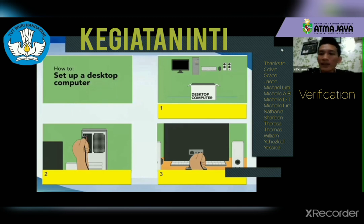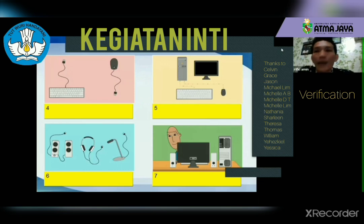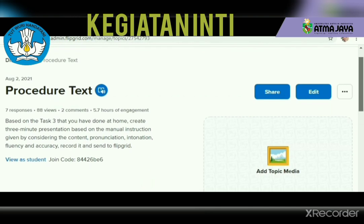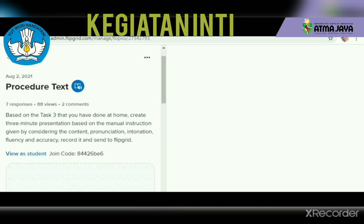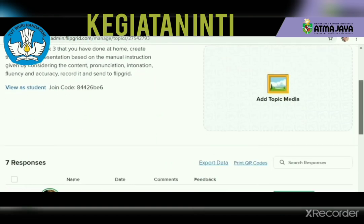There are seven steps. The first is the desktop computer, then second, third, fourth, five, six, and seven. Please record a three-minute presentation and upload it to Flipgrid so we can discuss it all together. You get my point? For the procedure text, there are seven responses based on Task Three that you have done at home — create a three-minute presentation on the manual instructions. I will play one first and you reflect on what to do, then we discuss your performance.